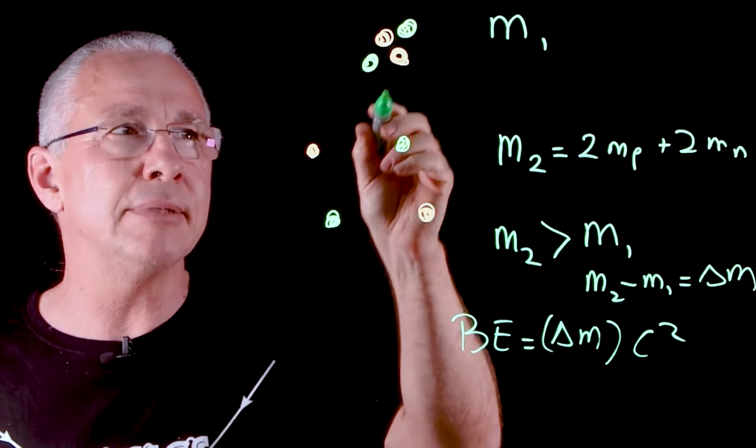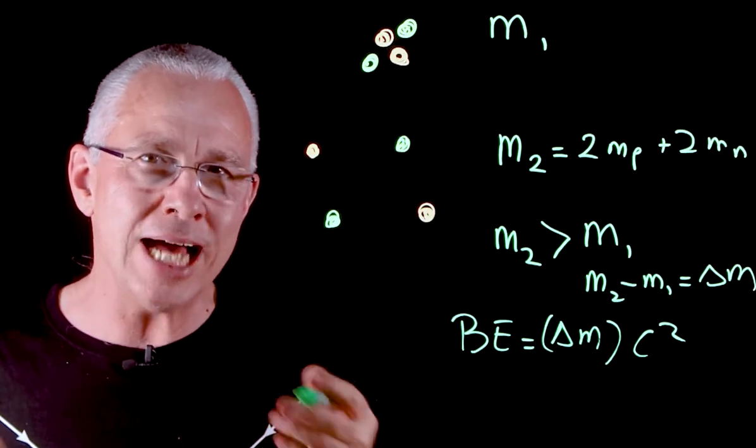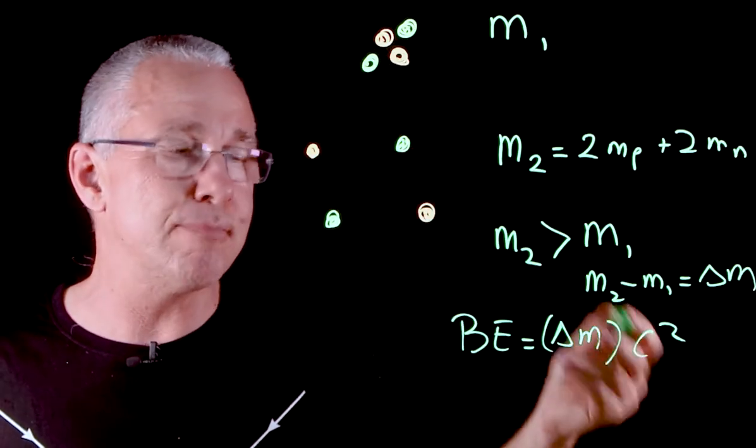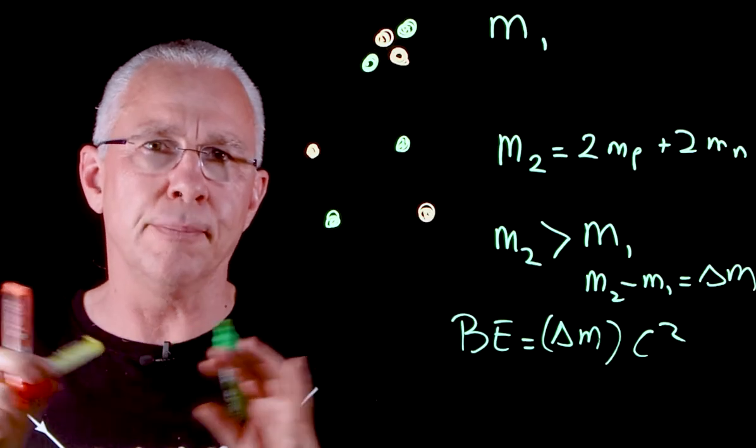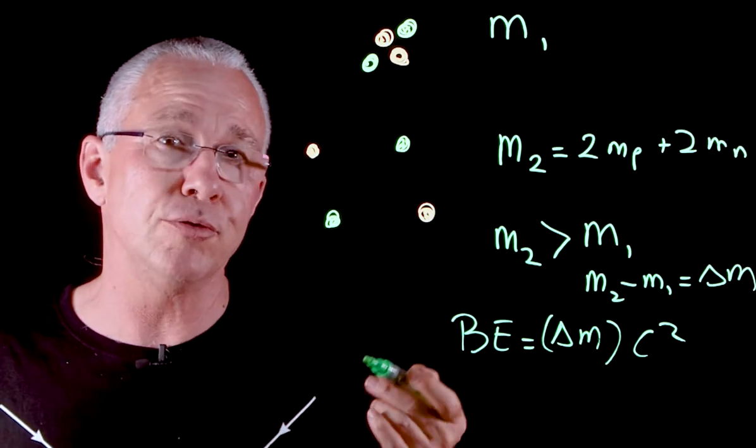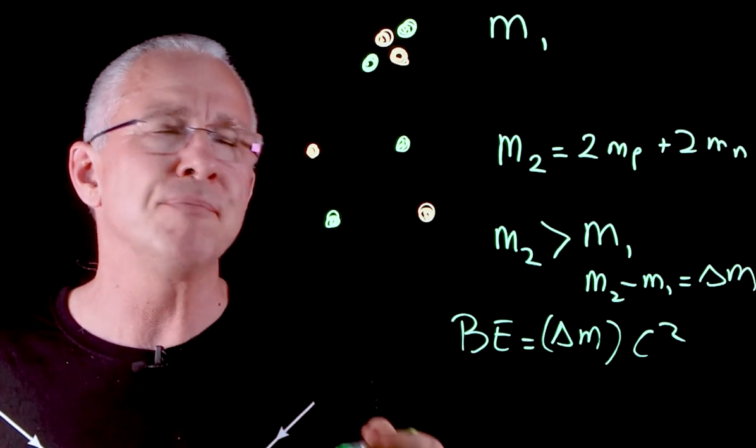My atom here is a small atom. Large atoms will have a larger mass defect and therefore require much more energy to pull them apart. For example, uranium-238, 238 nucleons, I'm going to have a lot of energy, a lot of mass defect.